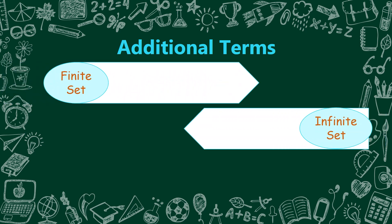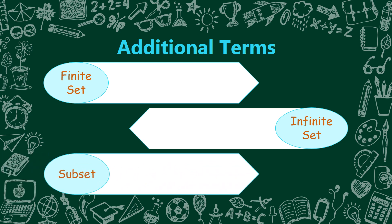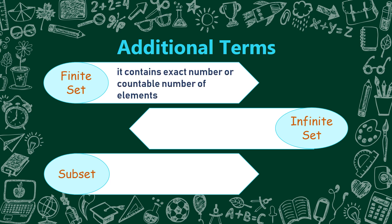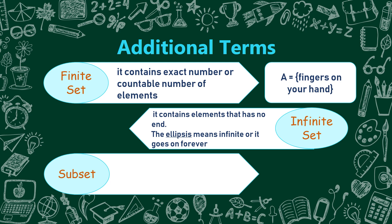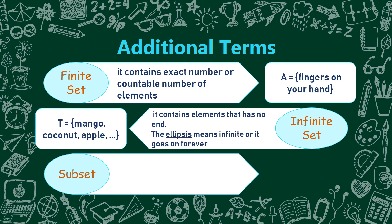We have finished set, infinite set, and subset. A finite set contains an exact or countable number of elements. Example: Set A is equal to fingers on your hand — we have 5, so this is considered a finite set. An infinite set contains elements that have no end — the opposite of a finite set with an exact count. For infinite sets, we use the ellipsis or the three dots, meaning the set goes on forever. Example: Set T is equal to mango, coconut, apple, ...